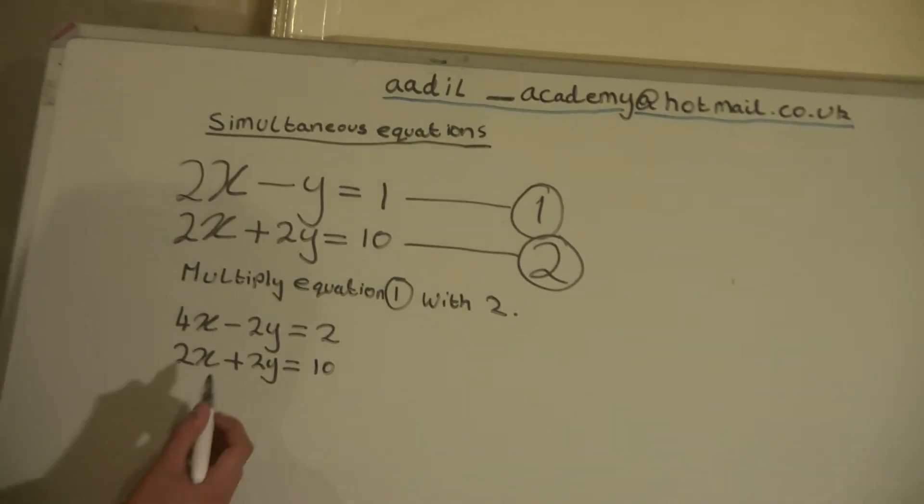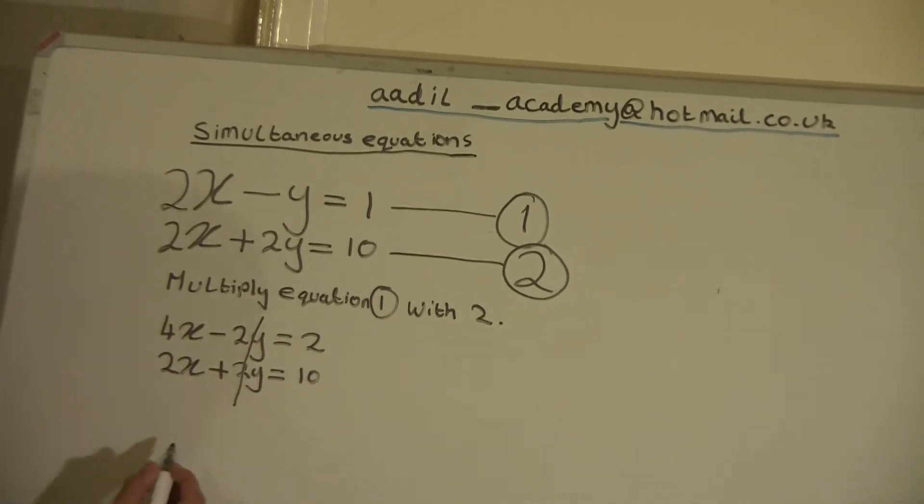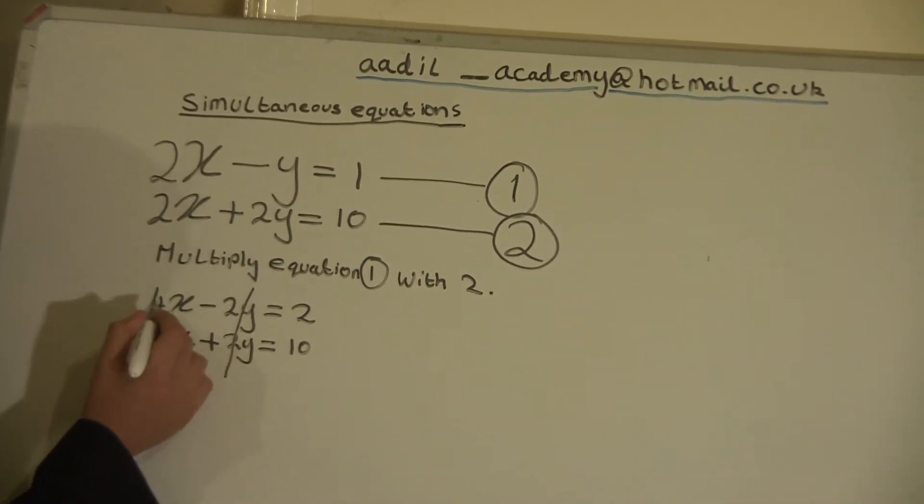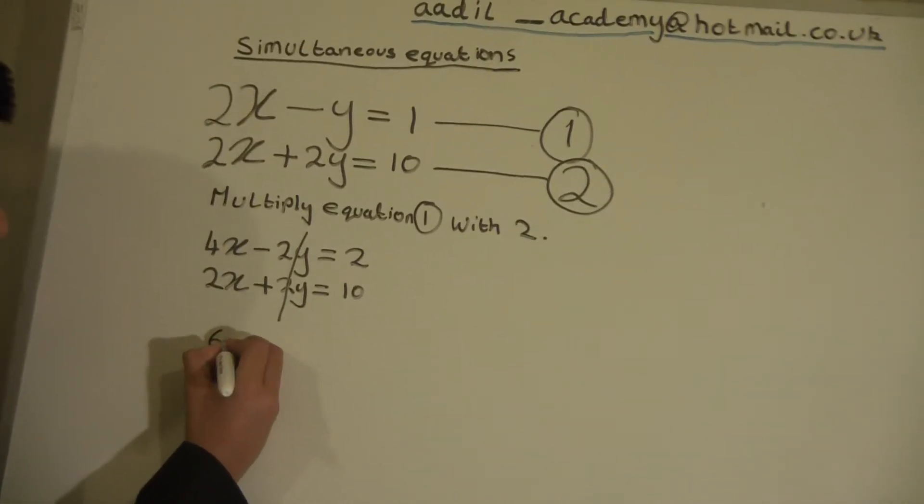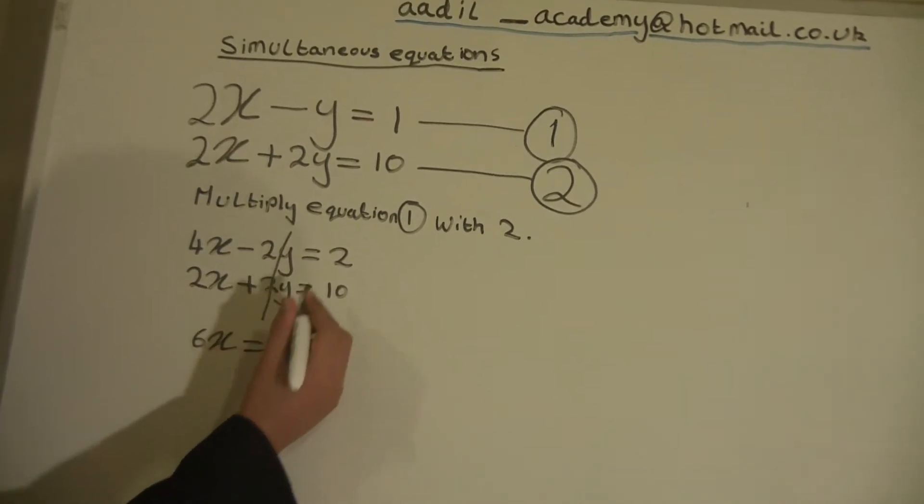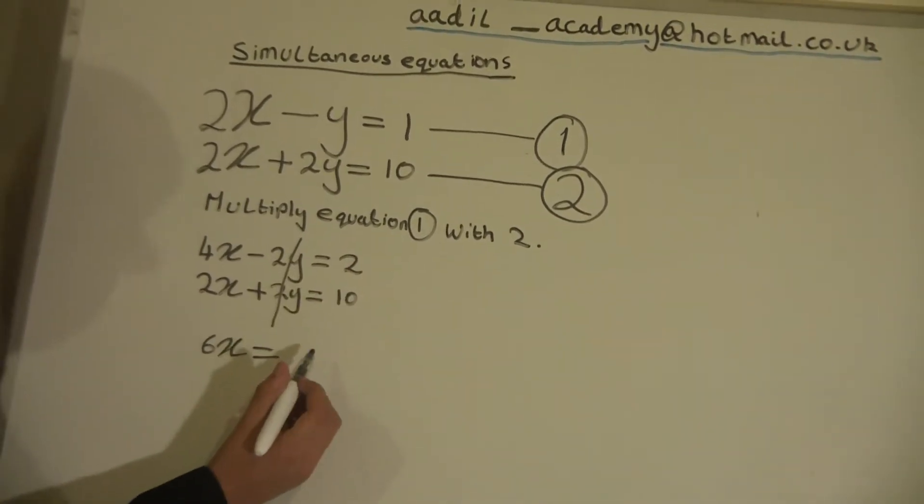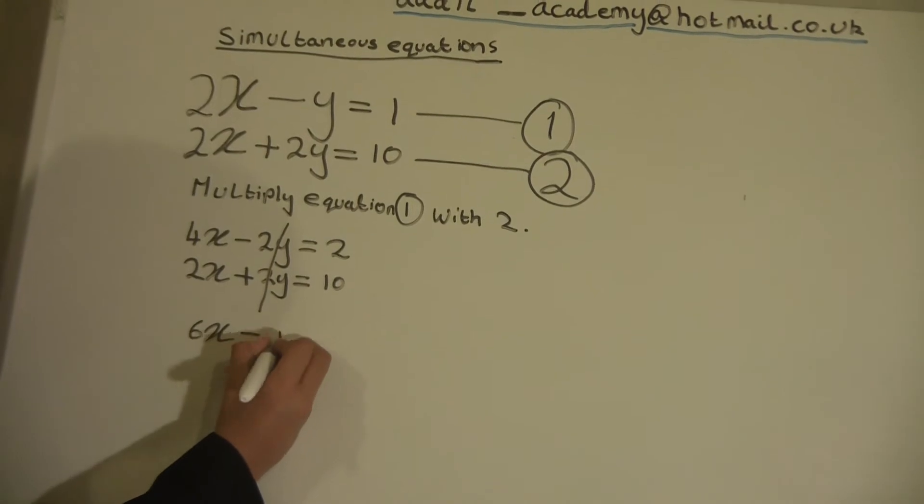Now we will cancel these two. And we will add these two, which equals 6x. And we will add these two, 10 and 2 equals 12.